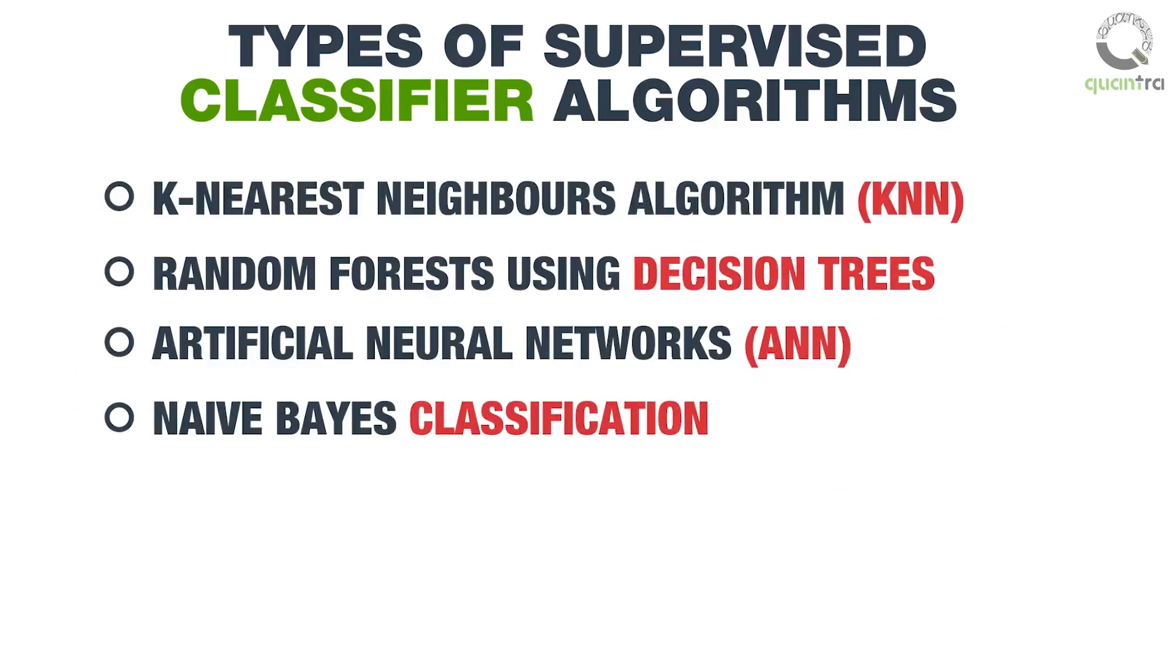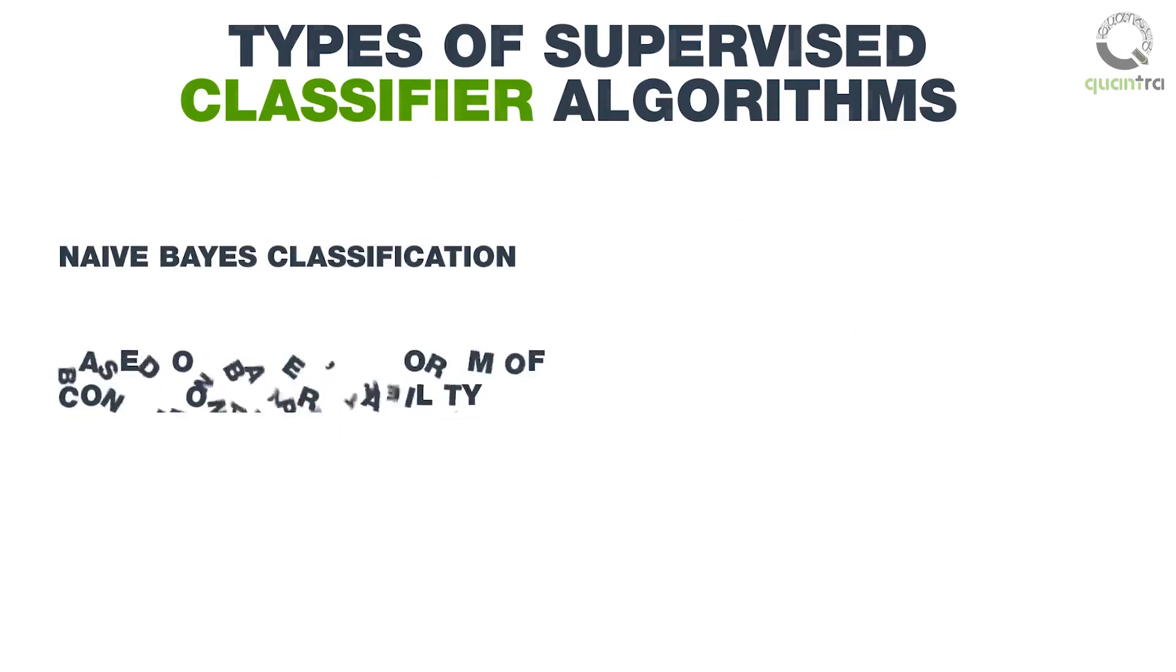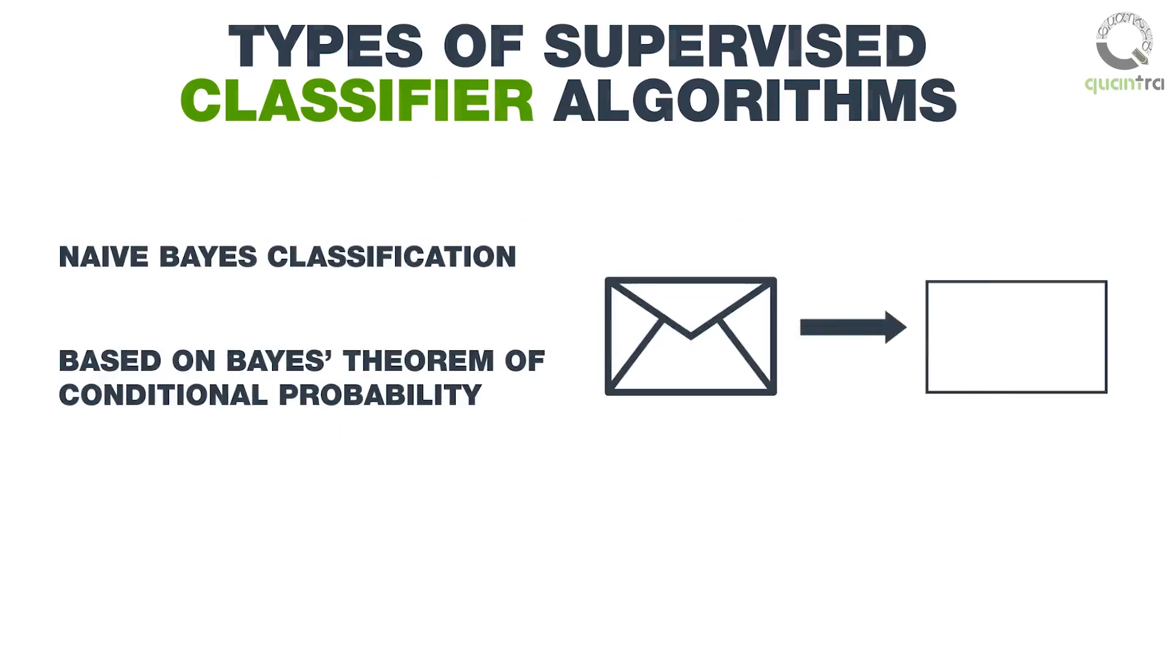The last classifier algorithm which we will discuss is the naive Bayes classification. This algorithm is based on Bayes' theorem of conditional probability.